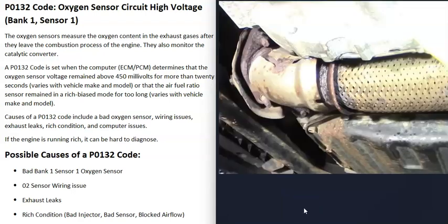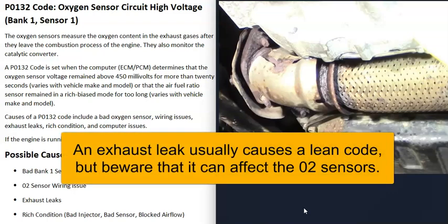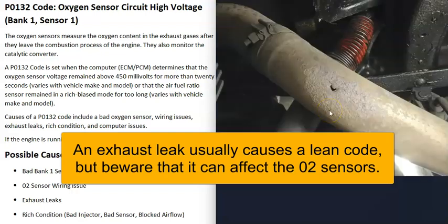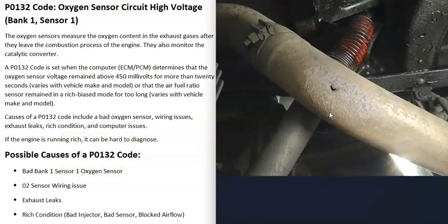Another possible cause is an exhaust leak. If there's an exhaust leak and outside air is getting into the exhaust, it can throw those sensors off and cause them to do erratic things. So it's a good idea to check for any exhaust leaks near the bank one sensor one O2 sensor.